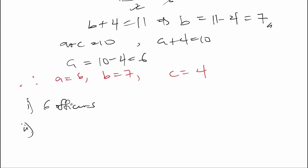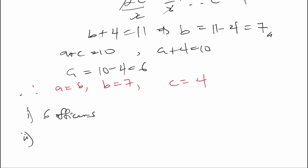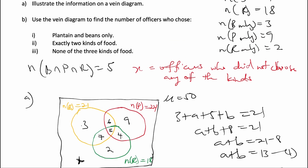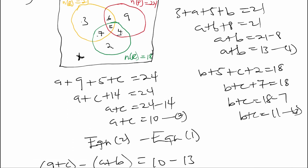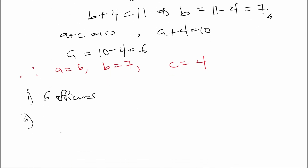For part B(ii), the number of officers who chose exactly 2 kinds of food is a + b + c = 6 + 7 + 4 = 17 officers.